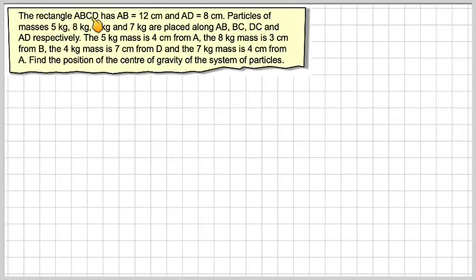The rectangle ABCD has AB equal to 12 centimetres and AD equal to 8 centimetres. Particles of masses 5 kilograms, 8 kilograms, 4 kilograms and 7 kilograms are placed along AB, BC, DC and AD respectively.